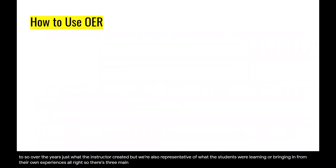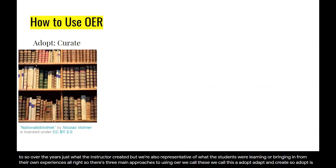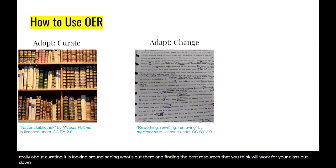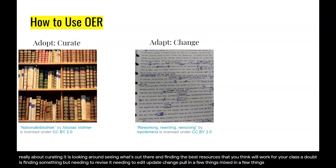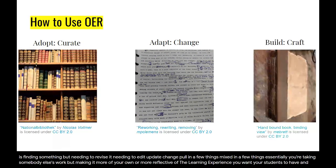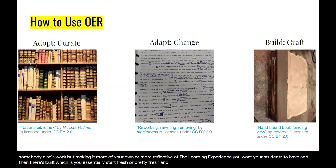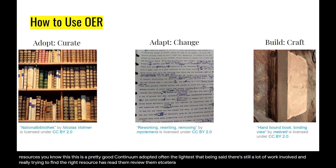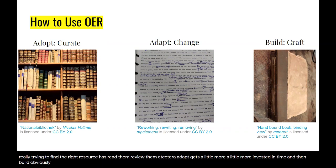There are three main approaches to using OER: Adopt, Adapt, and Create. Adopt is really about curating — looking around, seeing what's out there, and finding the best resources that will work for your class. Adapt is finding something but needing to revise it, edit it, update it, change it, pull in a few things, mix in a few things — essentially taking somebody else's work and making it more your own or more reflective of the learning experience you want your students to have. And then there's Create, where you essentially start fresh and build something out entirely. In terms of intensity of time and resources, this is a pretty good continuum: Adopt is often the lightest, though there's still a lot of work involved in finding the right resources, reading them, reviewing them. Adapt gets a little more invested in time, and Create obviously takes a lot of consideration.